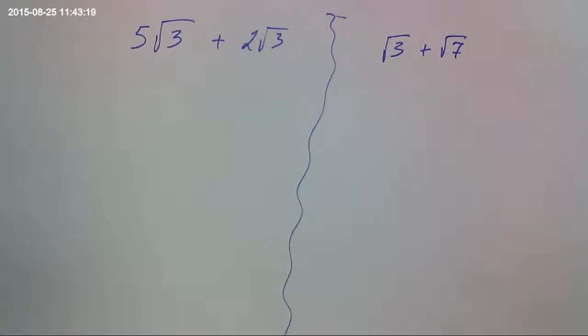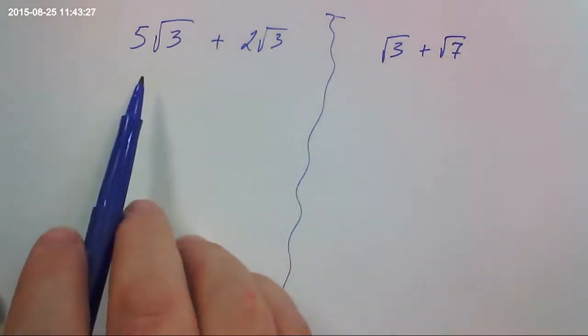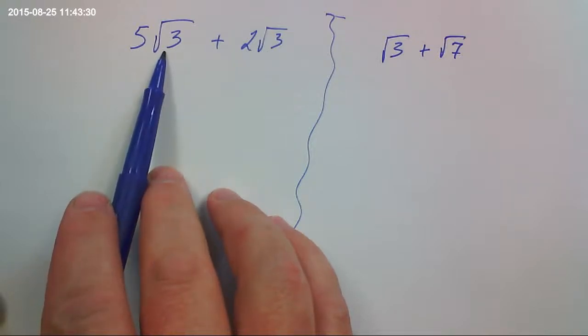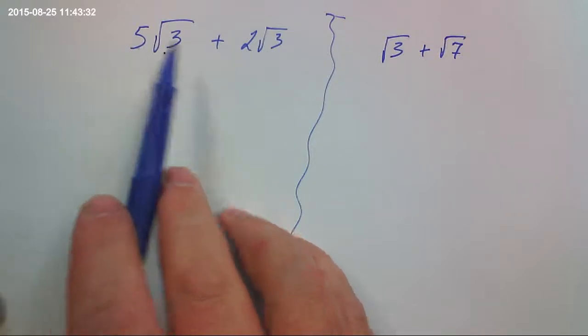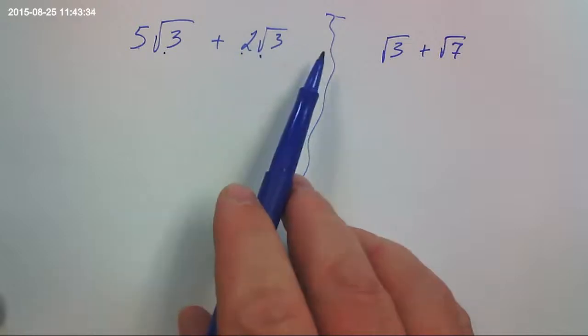In this video we're going to talk about how to manipulate square roots with addition and subtraction. First of all, the thing you've got to recognize is that this is the square root of 3 and there are 5 of them right here. And here we have the square root of 3 and we have 2 of them.